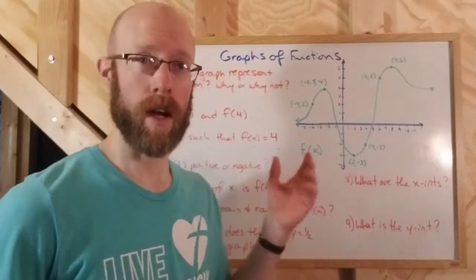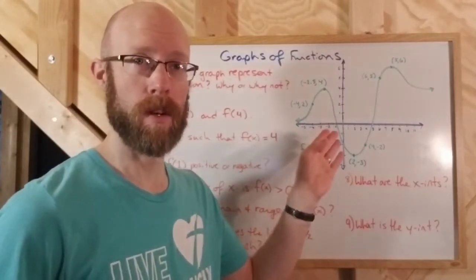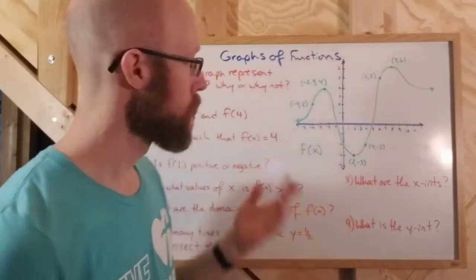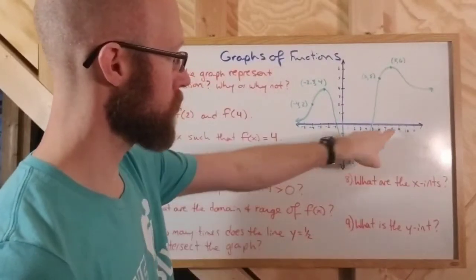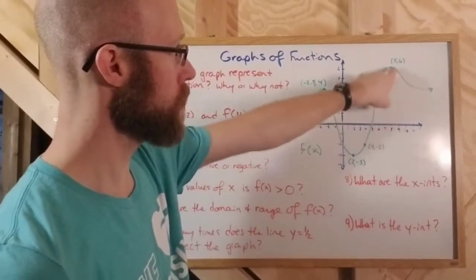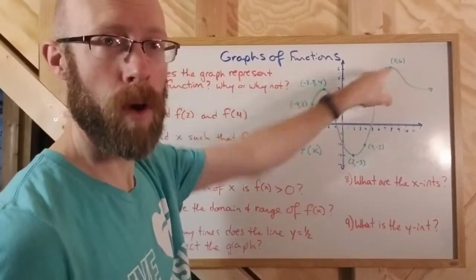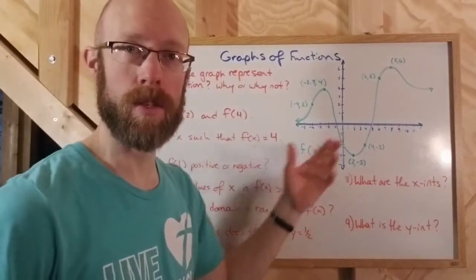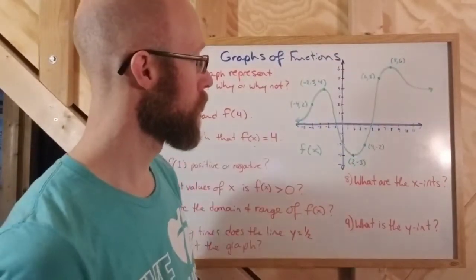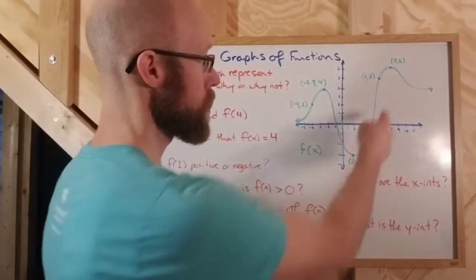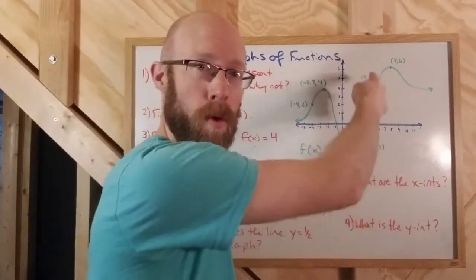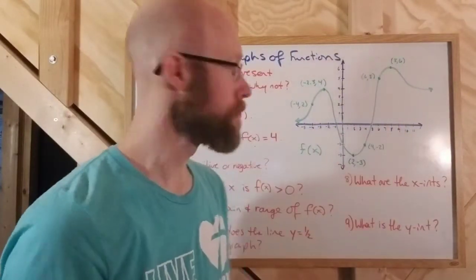I cannot have any x value have more than one y value associated with it. If I take an x value like 8, there's one y value — 6 — that corresponds to it right here. There isn't a second one, and so there's no other point vertically from that one.